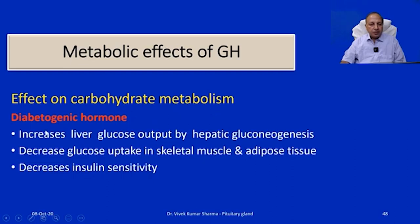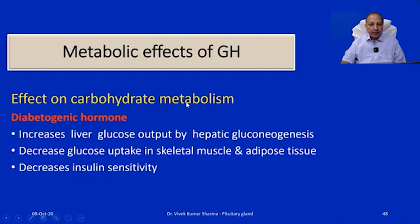Regarding carbohydrate metabolism, growth hormone is a diabetogenic hormone — it causes an increase in blood glucose level. When growth hormone increases, the body needs more fuel for anabolic purposes. The liver undergoes glycogenolysis and hepatic gluconeogenesis, increasing glucose production from proteins and fats. It also decreases glucose uptake in skeletal muscle and adipose tissue, so blood glucose level rises. It also decreases insulin sensitivity, making it a diabetogenic hormone.